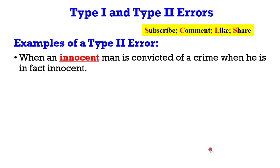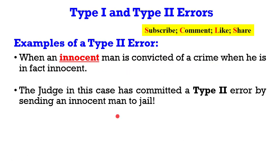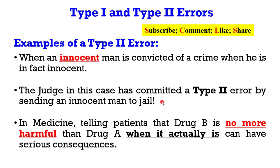How about a type 2 error? Still borrowing a leaf from the crime literature. When an innocent man is convicted of a crime when he is in fact innocent, the judge in this case has committed a type 2 error by sending an innocent man to jail. Also an example from medicine: when you tell patients that drug B is no more harmful than drug A when it is actually harmful, then such will have serious consequences and a type 2 error has been committed.